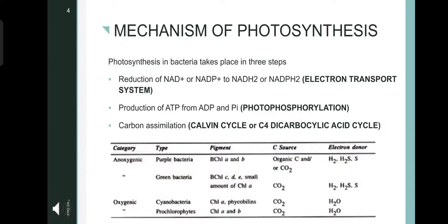Based on the pigment present and carbon source or electron donor utilized, the bacteria can be classified into four different categories. First is anoxygenic which includes the purple bacteria and green bacteria, and then oxygenic bacteria which includes the cyanobacteria and prochlorophytes.